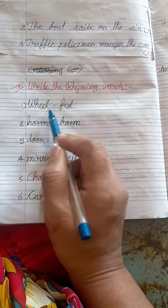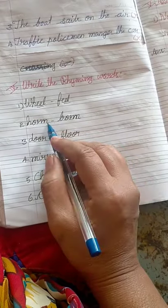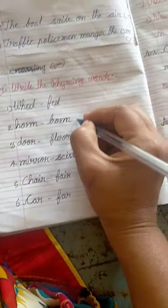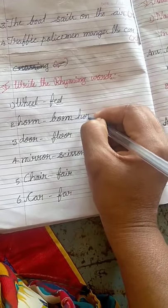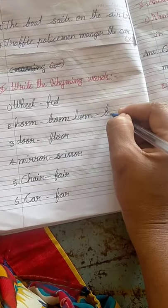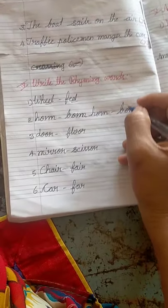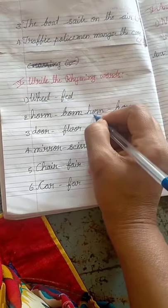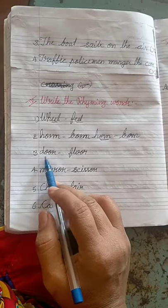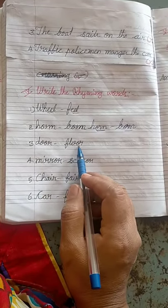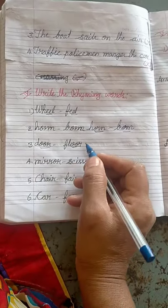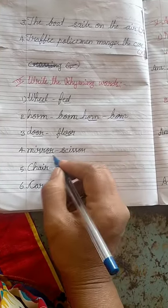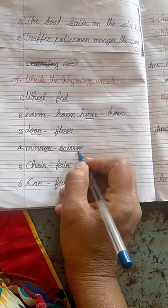Let's look at the rhyming words. Horn - born. Door - floor. Mirror - the OR sound. The OR pattern is the rhyming sound.